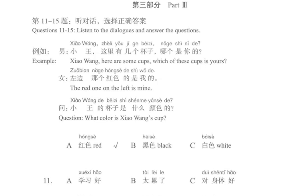第三部分。Part 3. 第十一到十五题，听对话，选择正确答案。Questions 11 to 15: Listen to the dialogues and answer the questions. 例如：小王，这里有几个杯子，哪个是你的？Xiao Wang, here are some cups — which of these cups is yours?